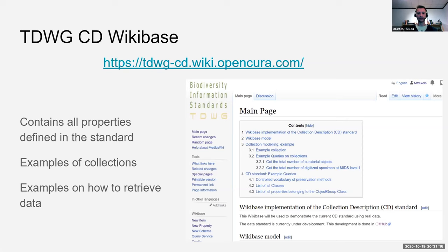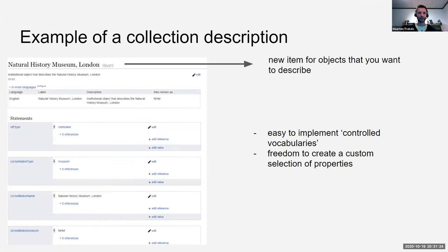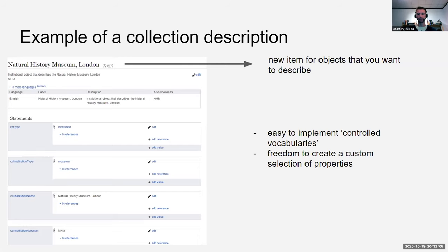As an example, here is the Natural History Museum in London — it has a Q-number with properties attached. These are not the typical Wikidata properties, but properties defined in the collection description standards. A big advantage is that we can also use the Wikibase way of working to implement the controlled vocabularies, so we can see which terms people are using or need to use to display their data.